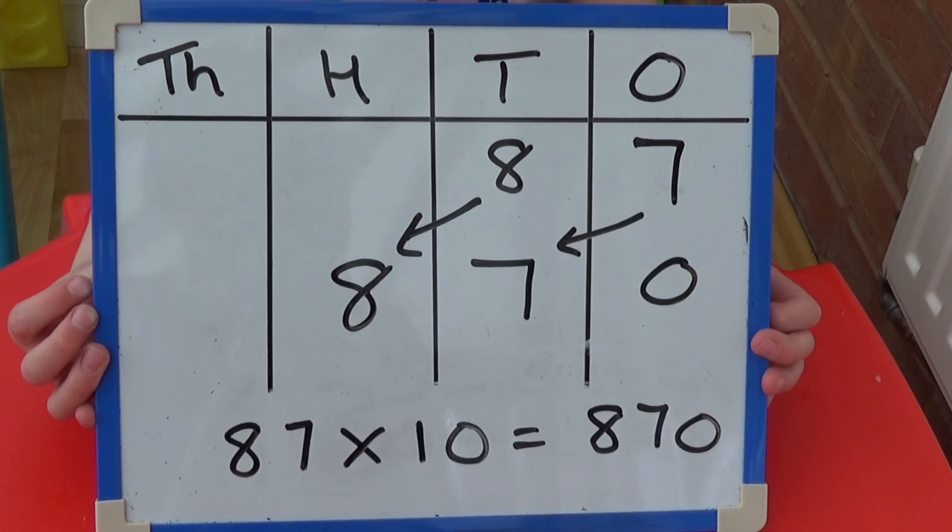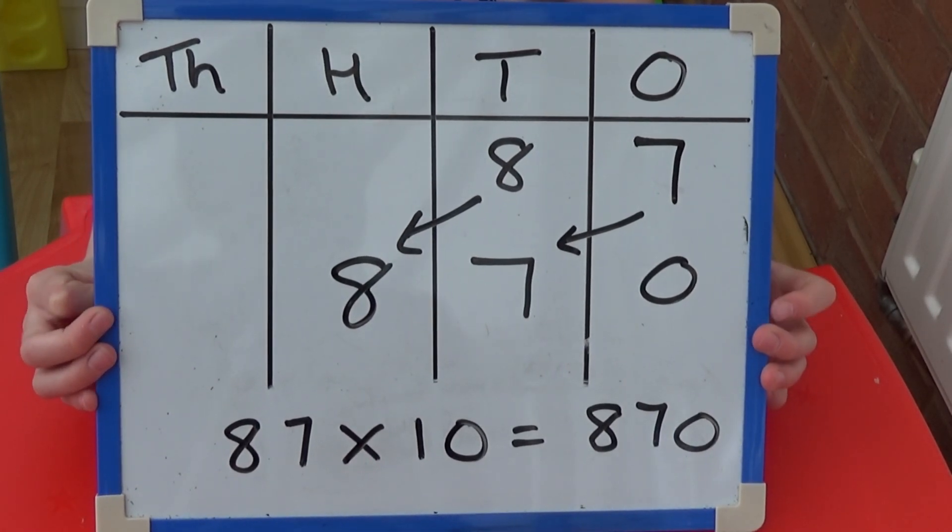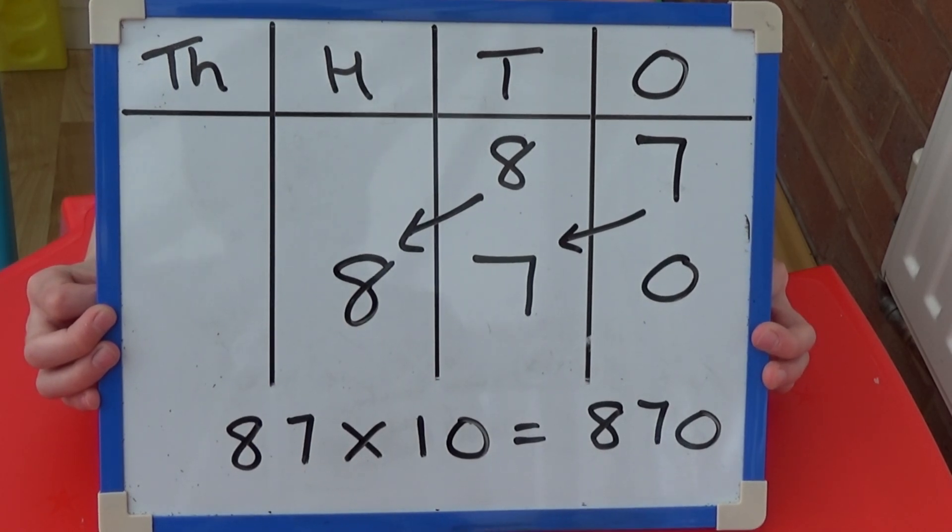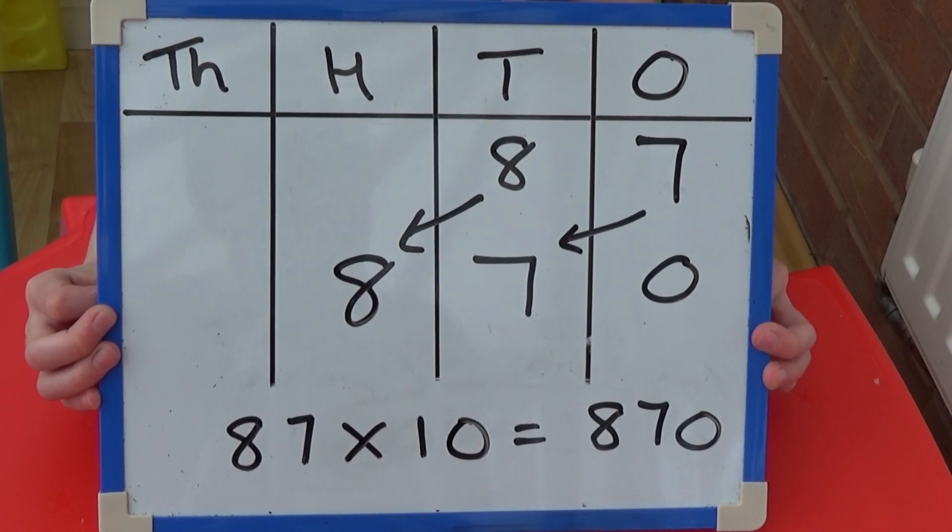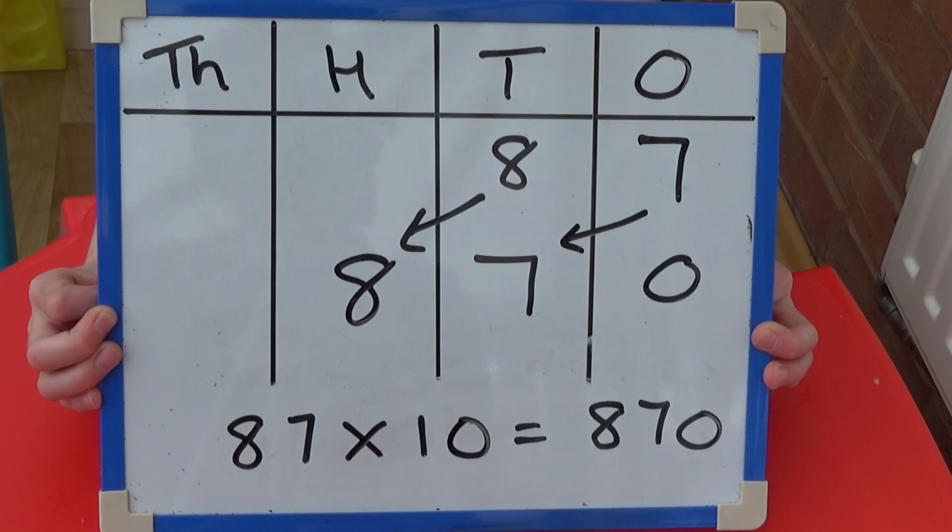For 87 times 10, each digit needs to move one column to the left. So 80 becomes 800 and 7 becomes 70. And we add the 0 into the 1s column. So 87 times 10 equals 870.